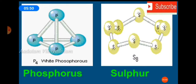Polyatomic molecules: a molecule containing more than three atoms is known as a polyatomic molecule. Examples are phosphorus, which is formed by four phosphorus atoms, and sulfur, which is formed by eight sulfur atoms. So molecules containing more than three atoms are known as polyatomic molecules.